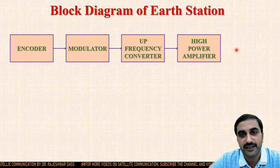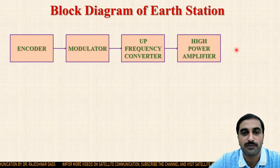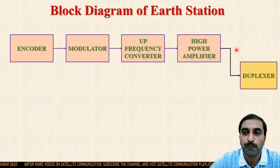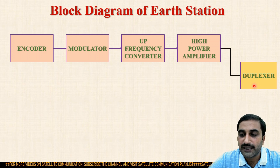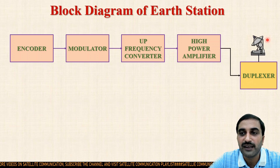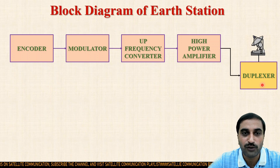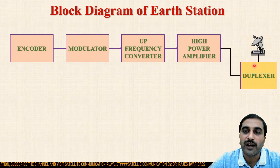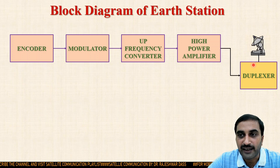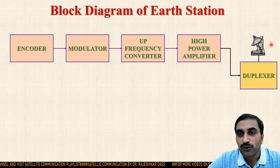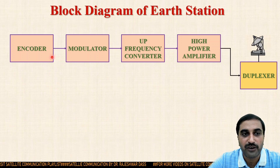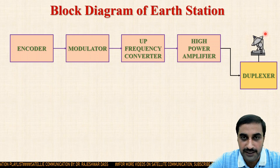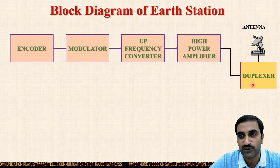If the transmitting earth station and receiving earth station are at the same point, then in that case we can use a single antenna by using another block known as the duplexer block. The duplexer block's property is that by connecting a single antenna, information can both be transmitted and received. So here we assume that the transmitting earth station and receiving earth station are at the same location, that's why I have utilized this duplexer circuitry and I am using a single antenna for both transmission and reception purposes. This is the basic block diagram of the transmitting earth station.